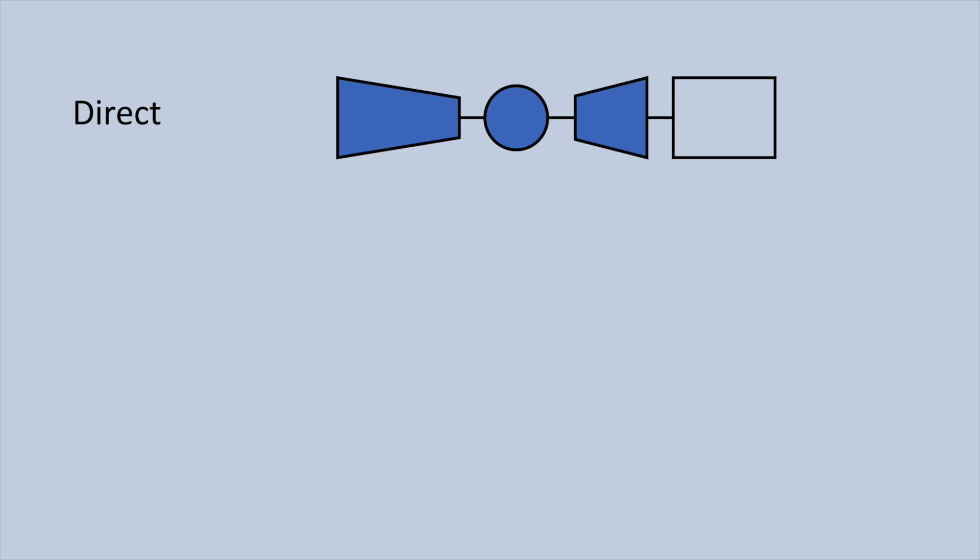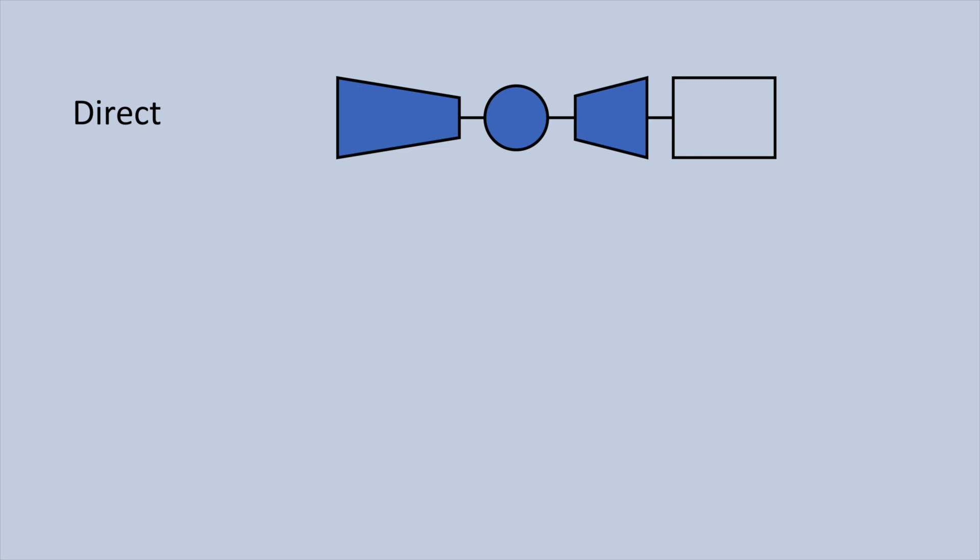Similar to aircraft engines, gas turbines designed to produce mechanical power often need to do this at a lower rpm. This is achieved similarly either through a separate power turbine or a gear.